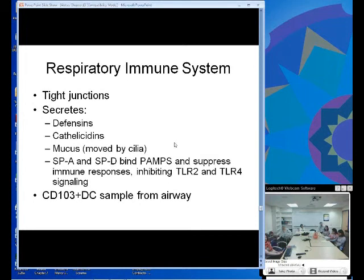Just a quick word about the respiratory immune system. The epithelium has tight junctions and secretes defensins, which are the natural antibiotics in our body. It has plenty of mucus used by cilia to bind and expel pathogens, and surfactant protein A and surfactant protein B, which bind to pathogen-associated molecular patterns (PAMPs) and suppress immune responses, inhibiting both TLR2 and TLR4 signaling. Just like the GI tract, you get CD103 positive dendritic cells that sample the airway to control the immune system and prevent persistent inflammation in an environment readily exposed to lots of different pathogens.